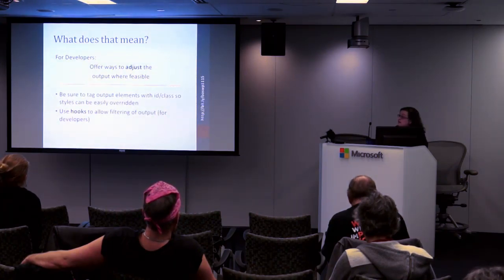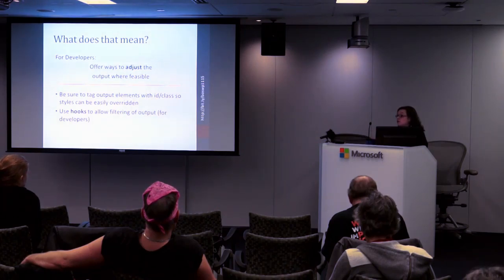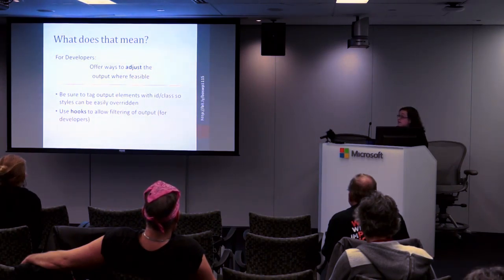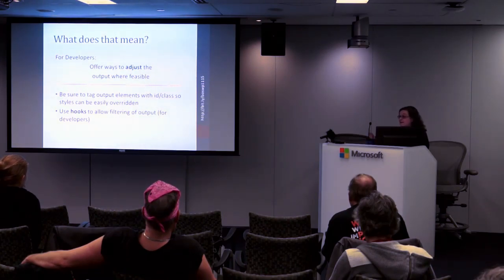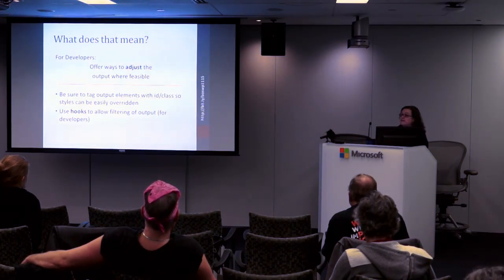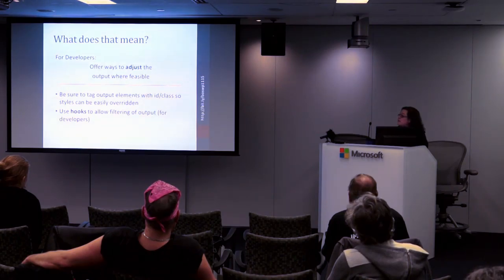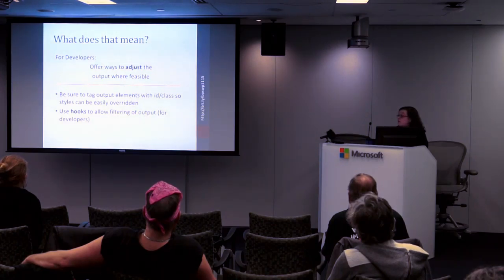For developers, I recommend offering ways to adjust the output — and that boils down to two main things. First, make sure all output elements are tagged with IDs and appropriate classes so users or other developers can style those elements without jumping through hoops. Second, use hooks to allow filtering of the output. Hooks are something your users will never see, but a developer who wants to modify your widget could use hooks to do so, hopefully without having to copy all your code and make their own widget.